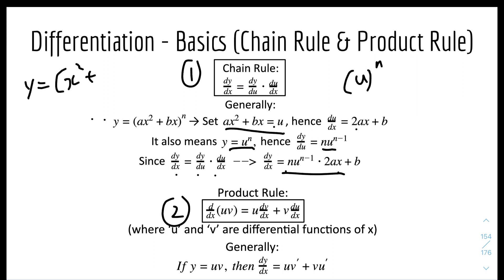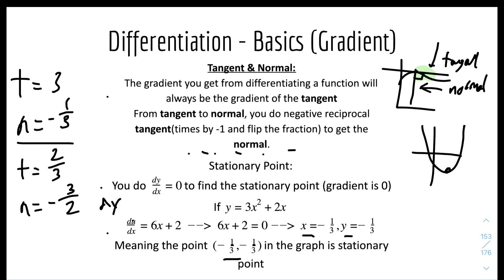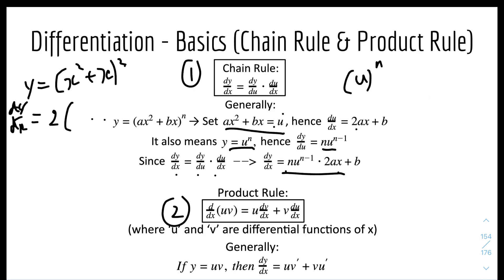Let's do an example: y equals (x squared plus x) squared. We can skip the u substitution and work directly. dy over dx: pull the power down to get 2, multiply by the derivative of the inside which is 2x plus 1, and reduce the power of the bracket by 1 to give (x squared plus x) to the power of 1. So the answer is 2(2x plus 1)(x squared plus x). It looks complicated but you just need to know the technique.